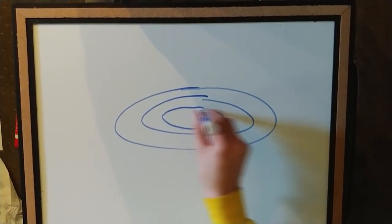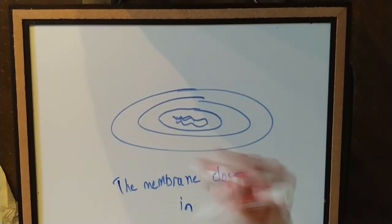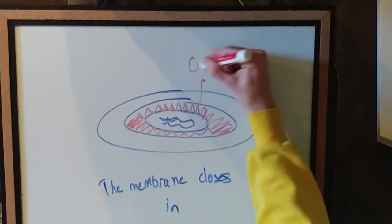The cell membrane around the mother cell closes in around the spore, and chemicals synthesize between the two membranes to form the cortex, a protective layer for the spore.